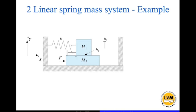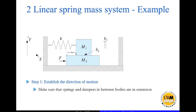Now let's look at this damping here. This damping can be thought of as a damper between the two bodies. First, you establish direction of motion. Before establishing direction of motion, we have to make sure that any spring or damper between the two bodies is in extension. That's just a configuration we assume to correctly derive the equations of motion. Otherwise, it will result in confusion and you might not get the equations of motion right. This is the procedure we follow.